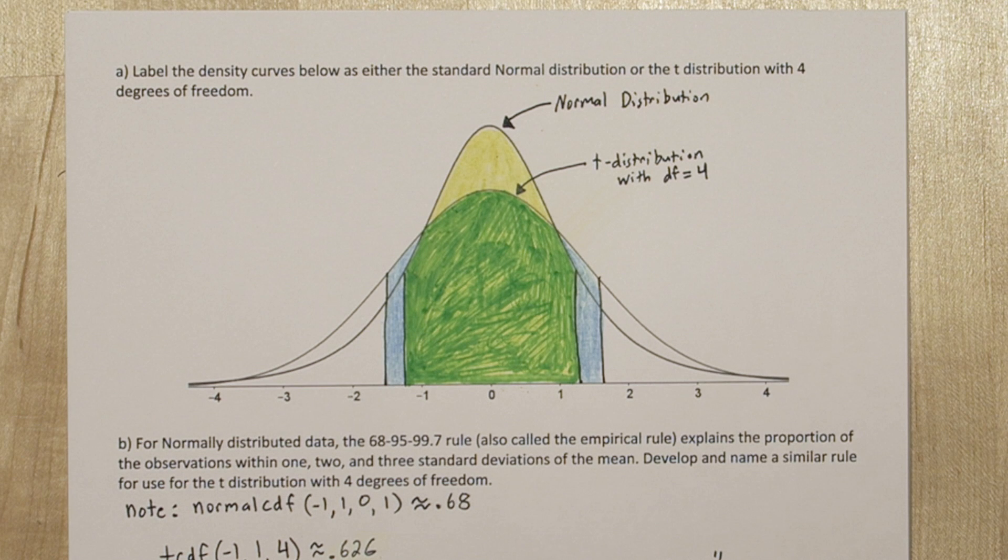Now notice there's part of each distribution that doesn't overlap. If you were to add up the blue area, it would actually equal the yellow area.